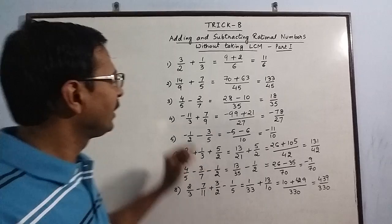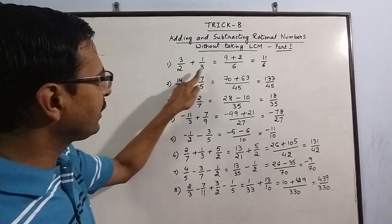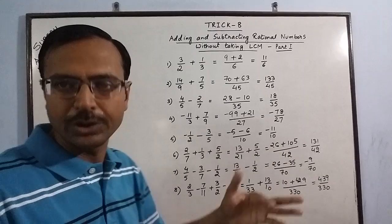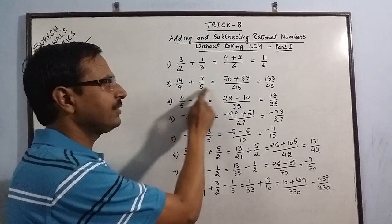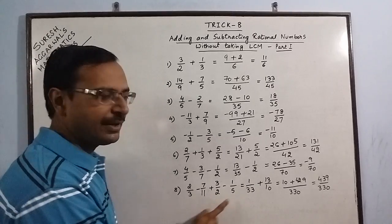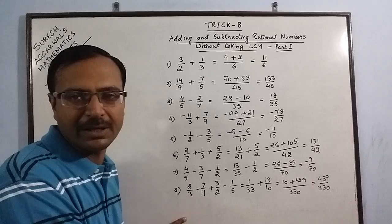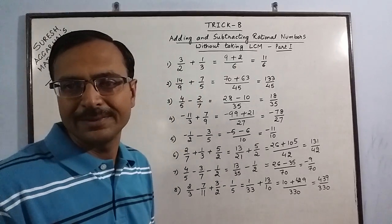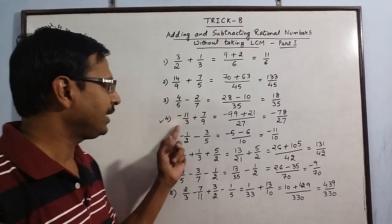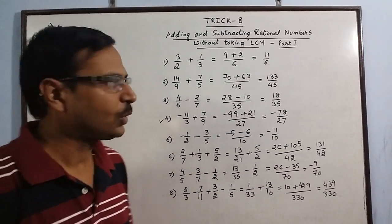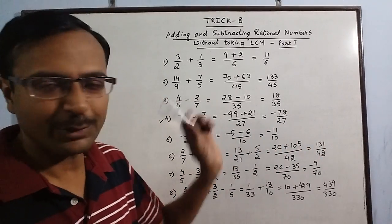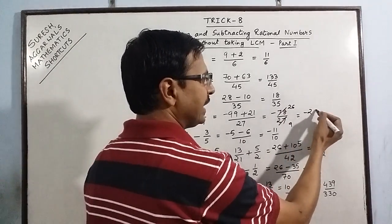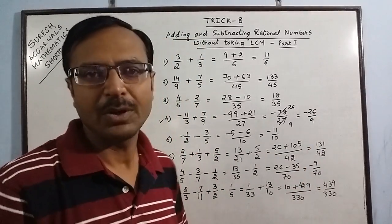Now in all these examples we took rational numbers in which the denominator did not have any common factor — the HCF of 2 and 3 is 1, there is no number which divides both. Similarly there is no common factor between 9 and 5. So this method is used only when there is no common factor in the denominators. When 3 and 9 had a common factor of 3, the final answer also has a factor of 3 between numerator and denominator which you can cancel out, arriving at minus 26/9.